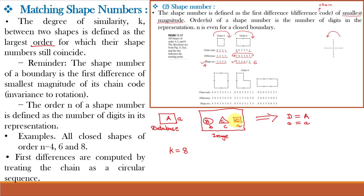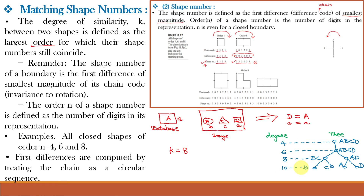For this object recognition we can draw the similarity tree. To draw the similarity tree we start with the lowest order, and we know that for 4-directional chain code the lowest order is order 4. Say for this lowest order 4, all shapes A, B, C, and D are similar, so we keep them at degree 4. Again at degree 6 we find that A, B, C, and D are similar, so we keep them as is. But at order 8 we find that B and C are different and A and D are different, so we separate them at order 8. At order 10 we find that A and D are also different, and of course B and C are also different. So shape A and shape D have the largest order 8 for which their shape numbers still coincide, and their degree of similarity is k equal to 8. By placing objects at different nodes we draw the similarity tree.